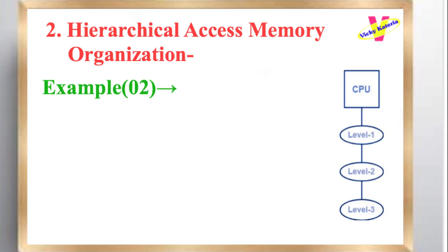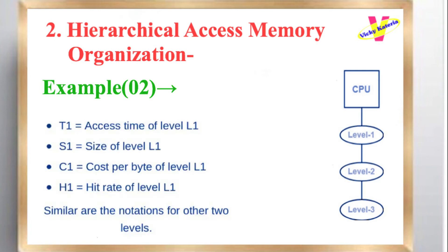Example 2: Consider the following hierarchical access memory organization. Here, three levels of memory are connected to the CPU in a hierarchical fashion. Let T1 = access time of level L1, S1 = size of level L1, C1 = cost per byte of level L1, H1 = hit rate of level L1. Similar are the notations for the other two levels.